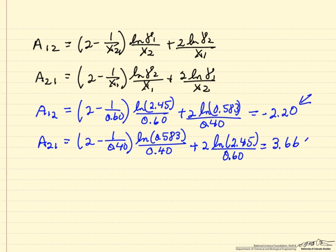I then substitute in the values for the conditions that we know, and I got the two parameters. I'm going to now use these two parameters to calculate gamma 1 and gamma 2 at our new conditions.